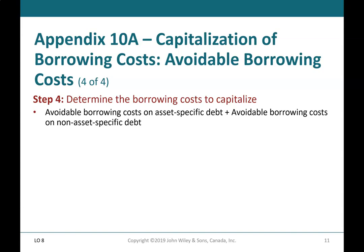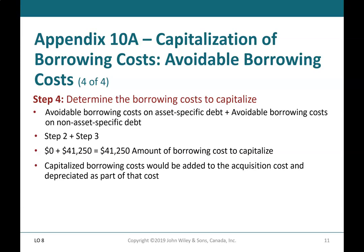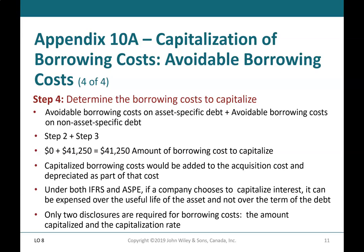Step 4: Determine the borrowing costs to capitalize — avoidable borrowing costs on asset-specific debt plus avoidable borrowing costs on non-asset-specific debt (Step 2 plus Step 3). $0 plus $41,250 equals $41,250, the amount of borrowing costs to capitalize. Capitalized borrowing costs are added to the acquisition cost and depreciated as part of that cost. Under both IFRS and ASPE, if a company chooses to capitalize interest, it can be expensed over the useful life of the asset and not over the term of the debt. Only two disclosures are required: the amount capitalized and the capitalization rate.